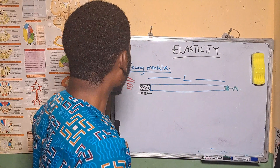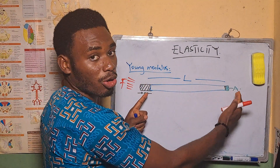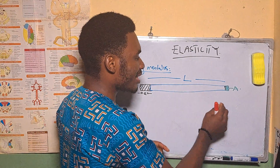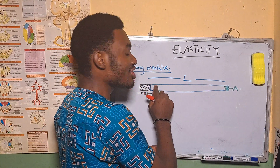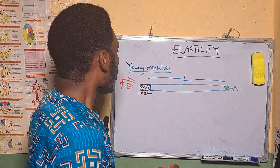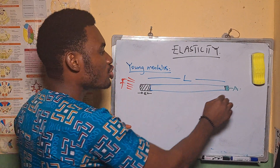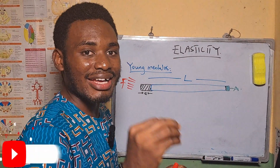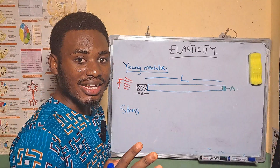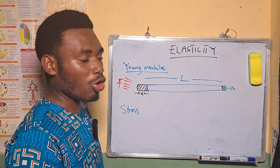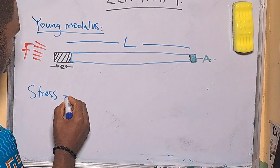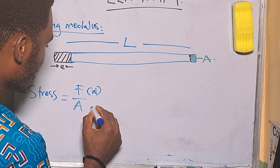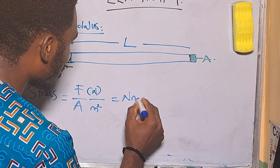When you apply a known force to a particular elastic object, the applied force causes an extension E. The elastic object has a cross-sectional area A, and L is the original length. When you compare the force applied to the area of the elastic object, that parameter is called the tensile stress. Mathematically, tensile stress equals F over A. When F is in newtons and area in metres squared, the unit is newton per metre squared.